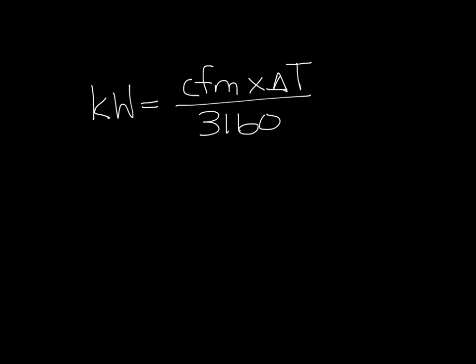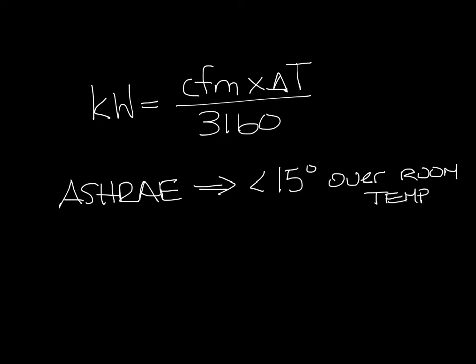So let's look at an example. Ideally per ASHRAE you don't want your heating supply temperature that's coming out of your diffuser to be greater than 15 degrees over room temperature. So for a 75 degree room you want about 90 degree air coming out of diffusers in heating.